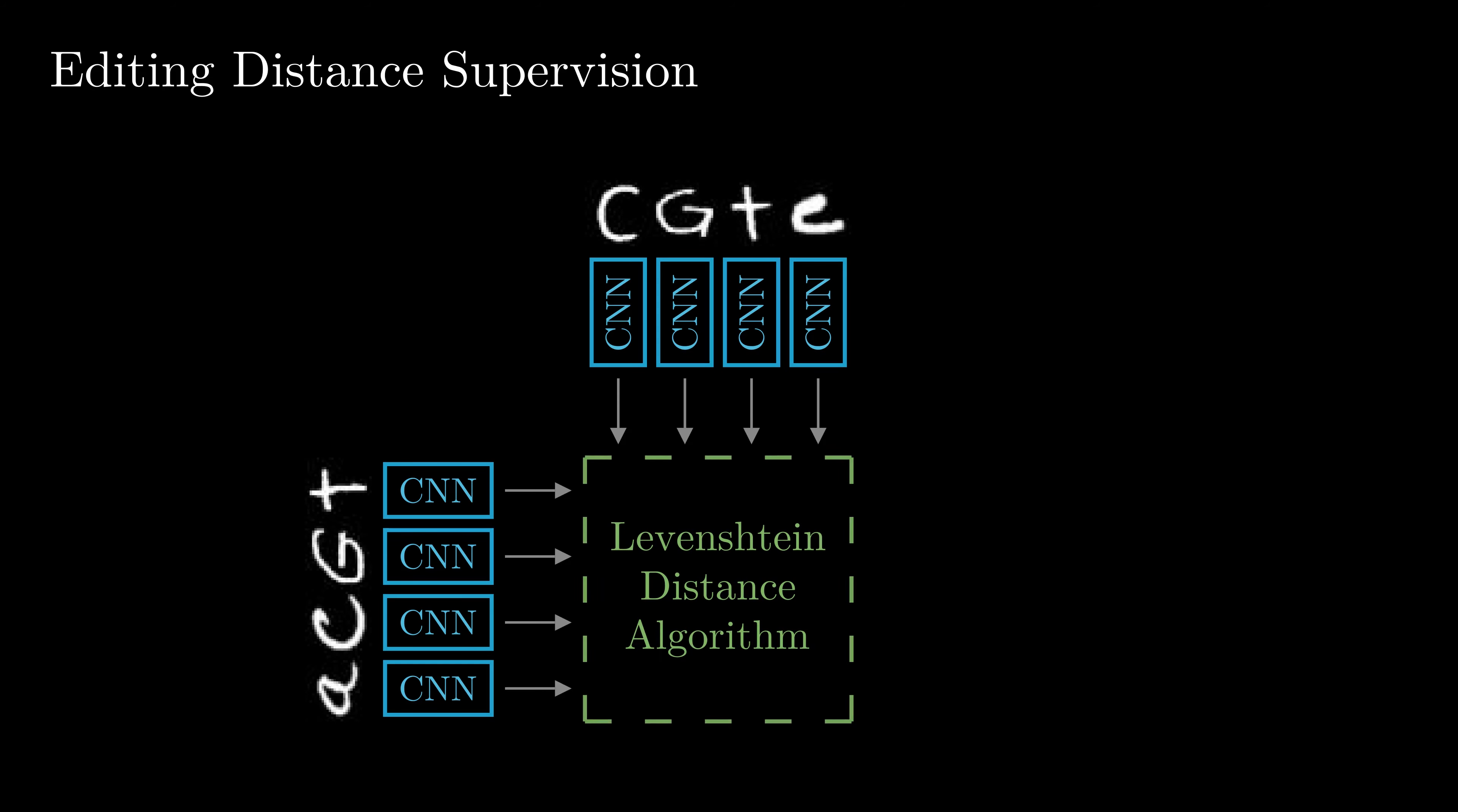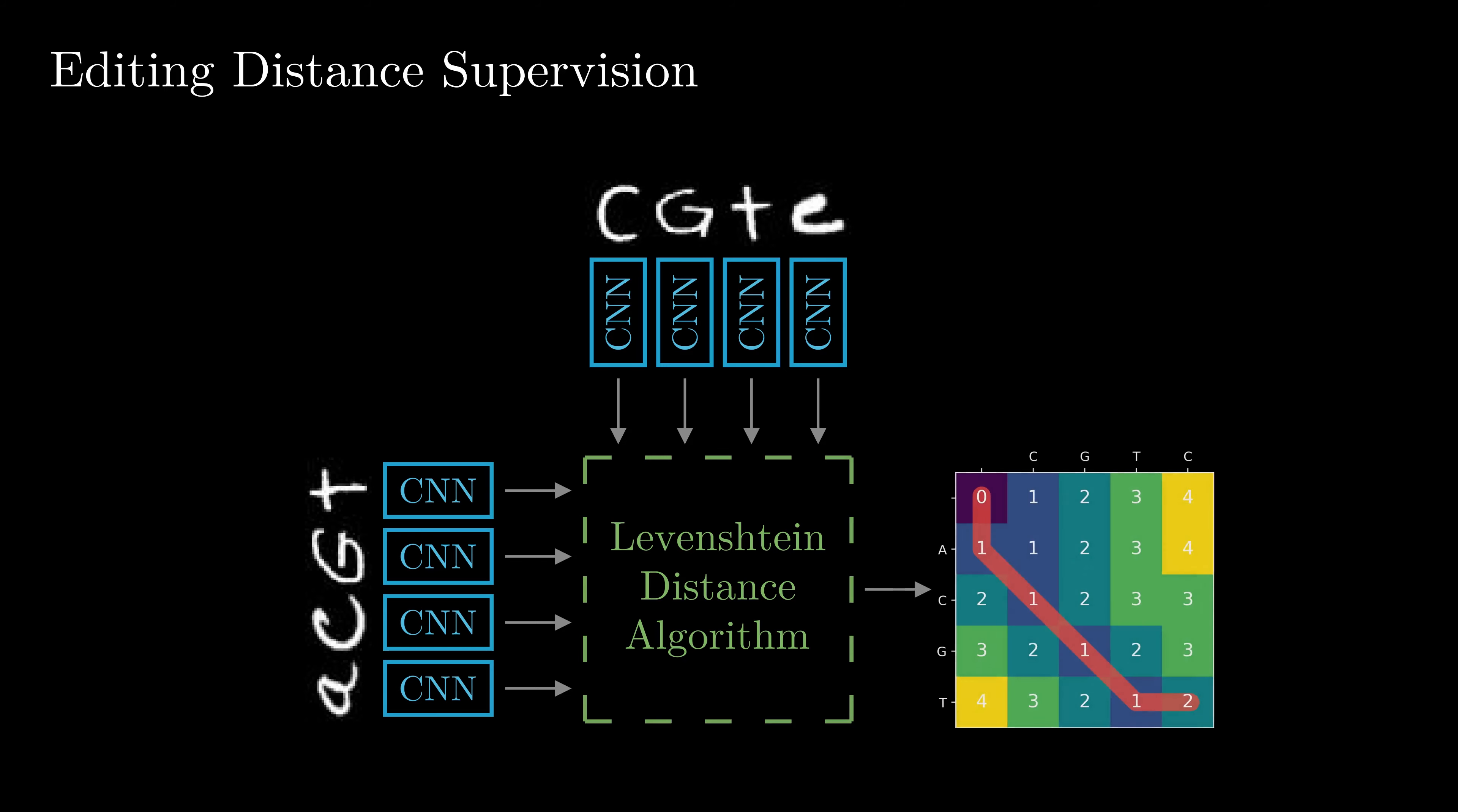We process all characters with the CNN and then propagate it through the algorithm. Here, we use the Levenshtein dynamic programming algorithm and relax it using our framework.